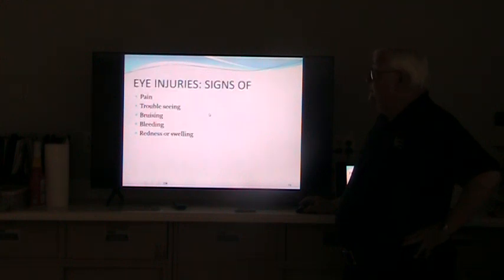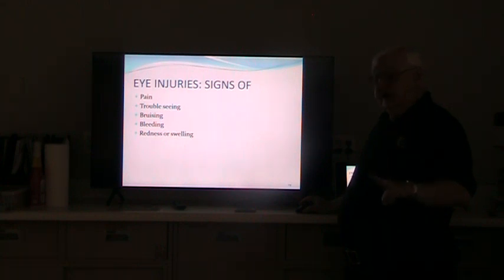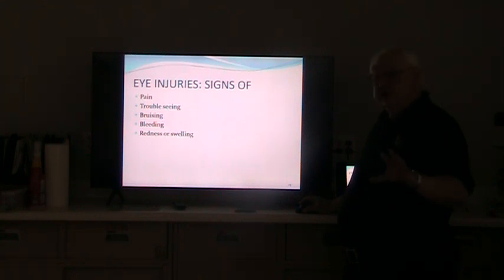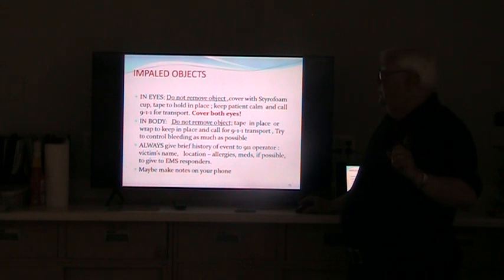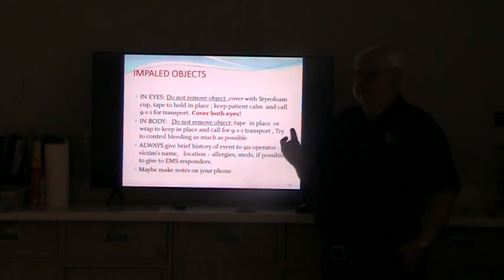Eye injuries — signs include pain, trouble seeing, bruising, bleeding, redness, or swelling. With all eye injuries, you want to cover not only the injured eye but the other eye too — both eyes get covered. The reason is that eyes track together, so if the person is looking around, both eyes keep moving. If there's a little piece of glass in one eye, that tracking is cutting that eye to shreds. Cover both eyes and explain to your patient what you're doing, because when you cover both eyes they're going to get upset about not being able to see. For an impaled object in the eye, cover with some type of cup that protects it, and again cover both eyes.